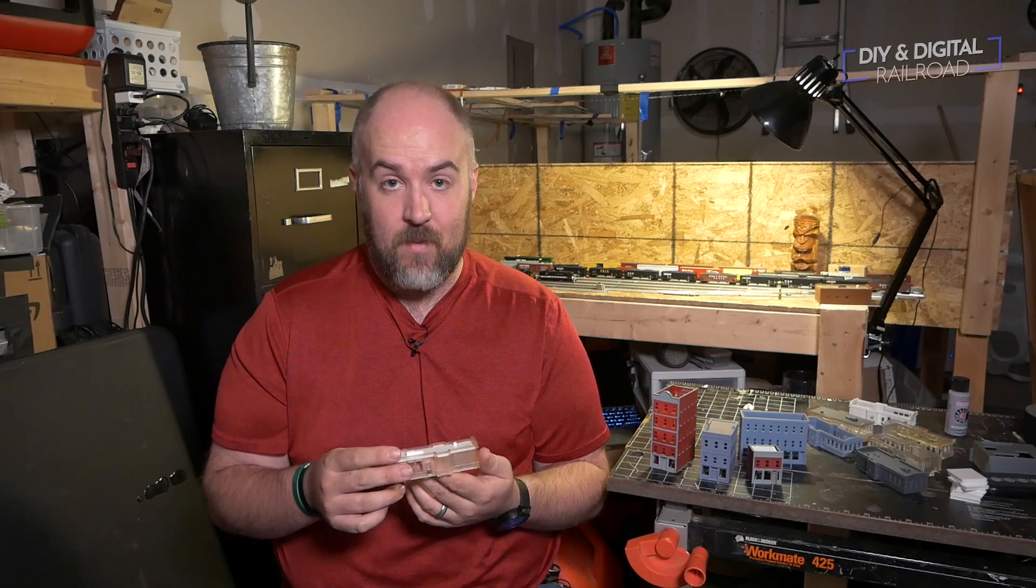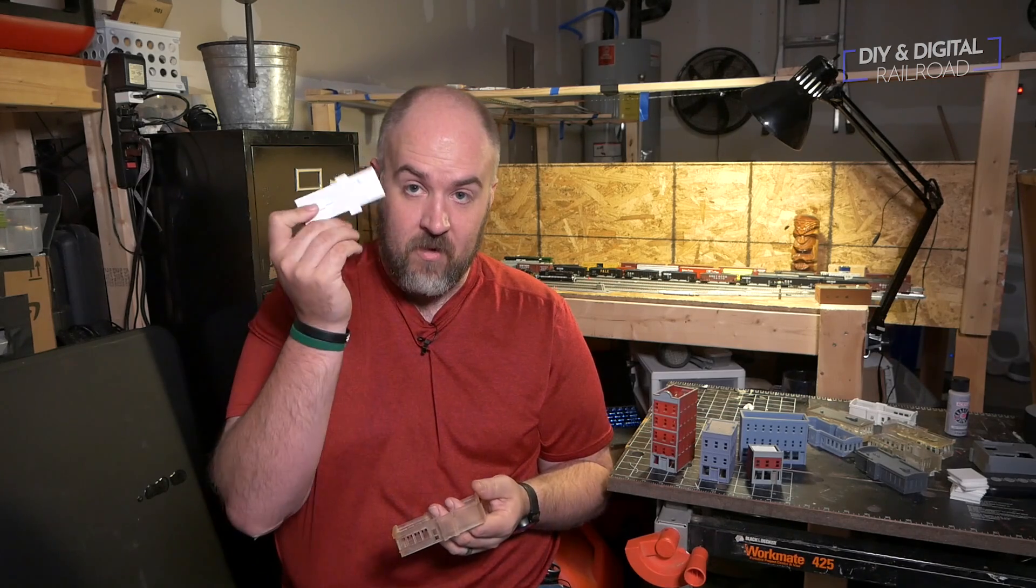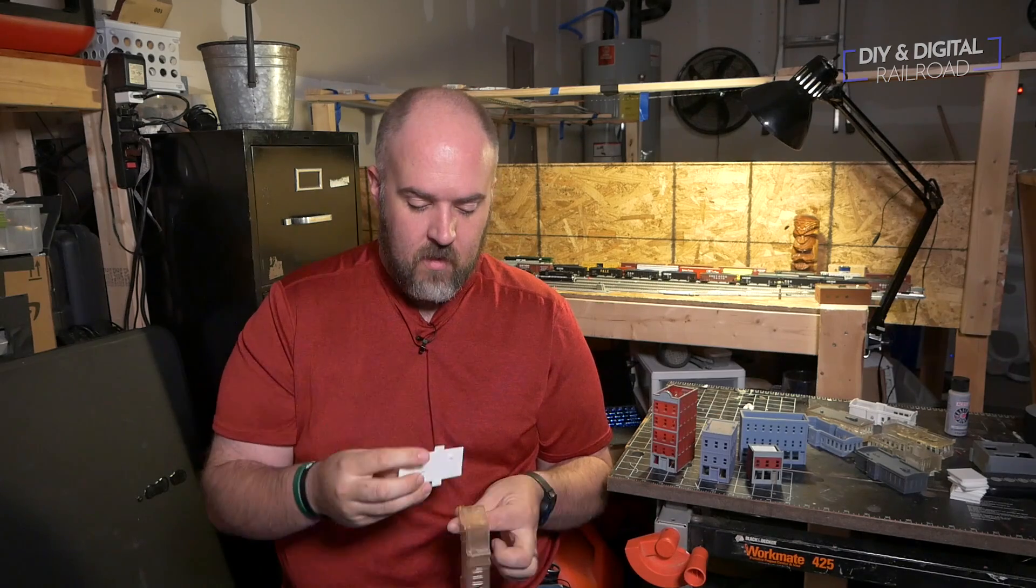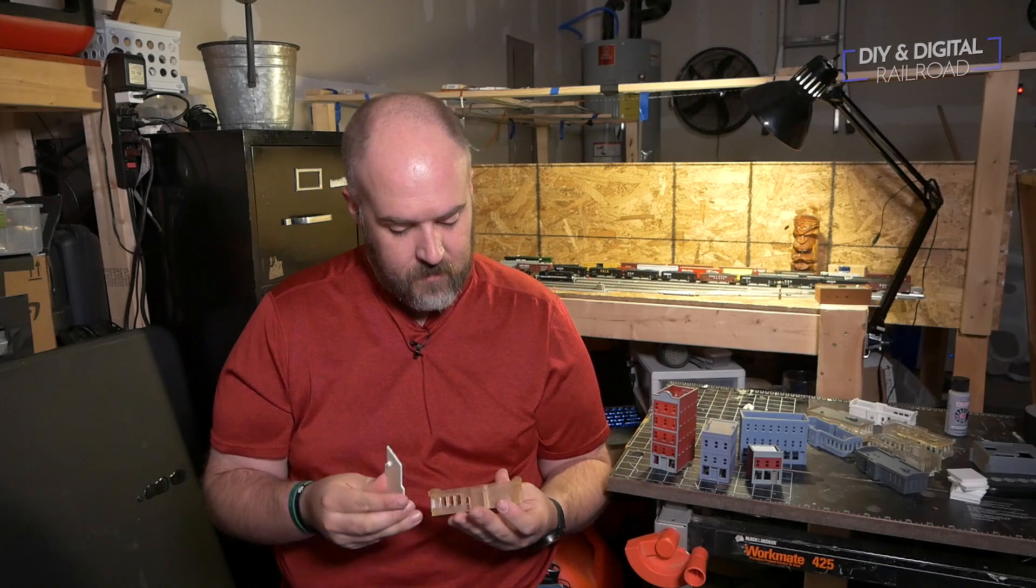So what I did was I made a roof insert based off of the roof. I just cut out the roof, made the roof insert, and I printed it up on my FDM 3D printer.